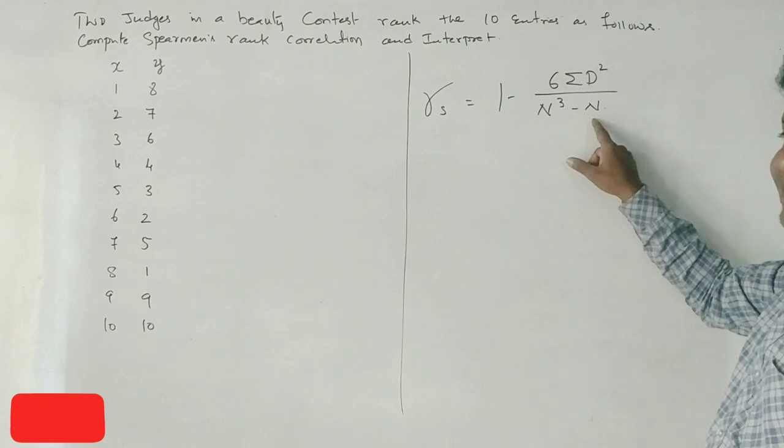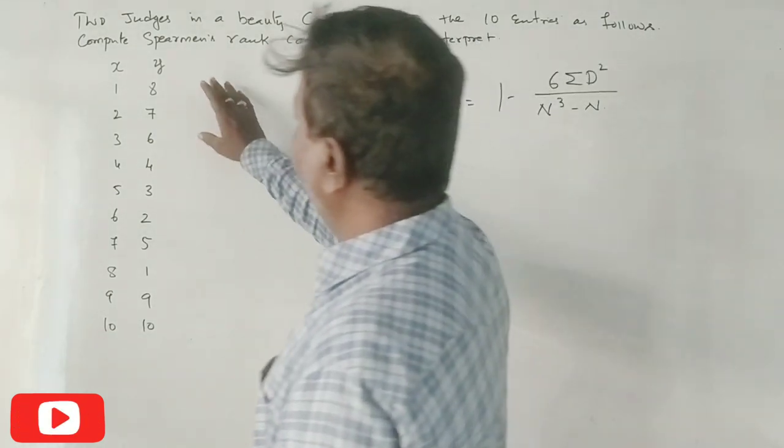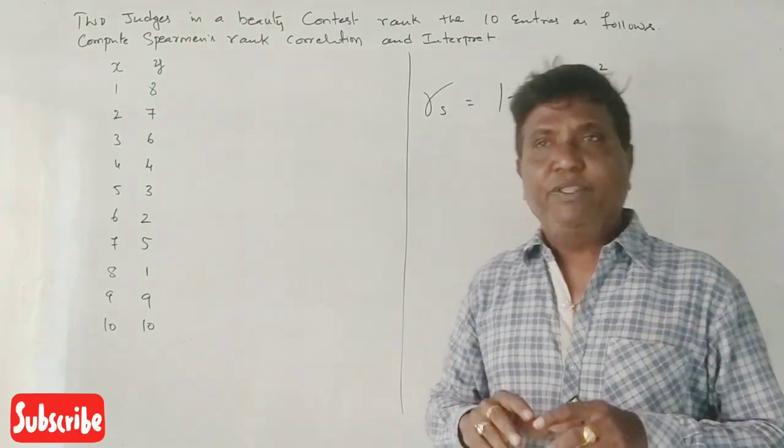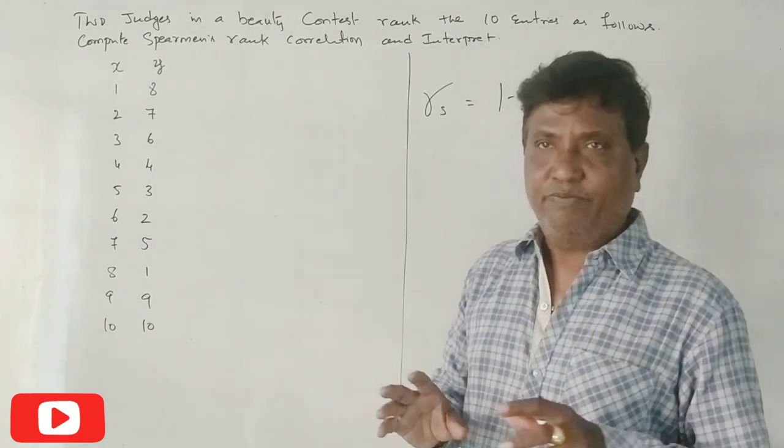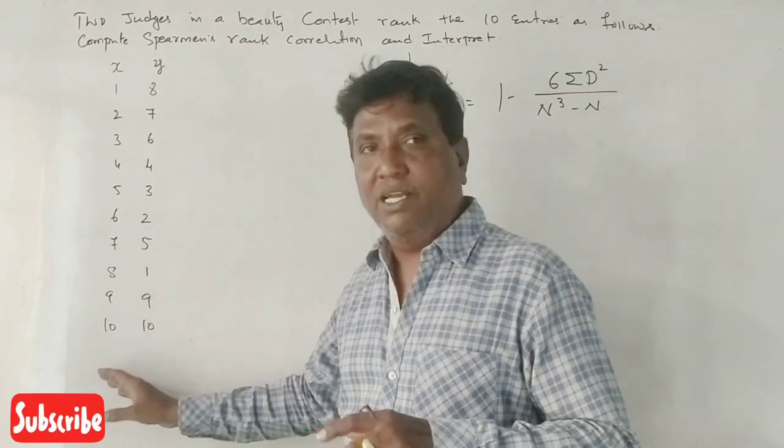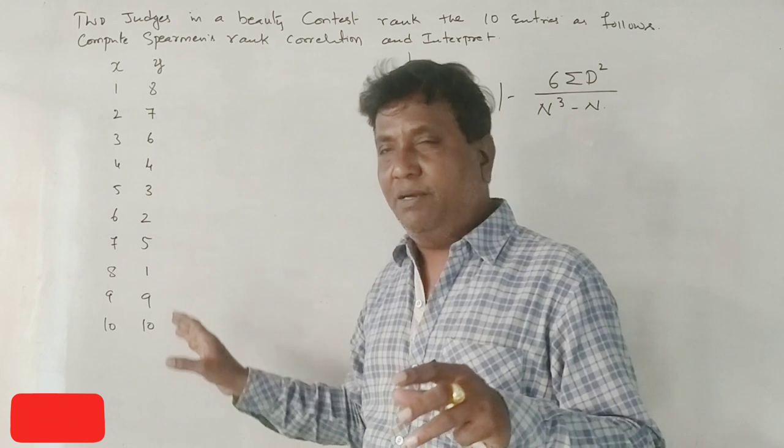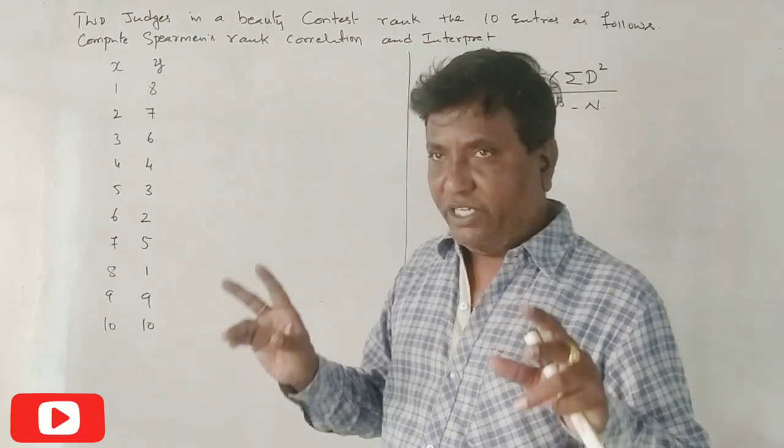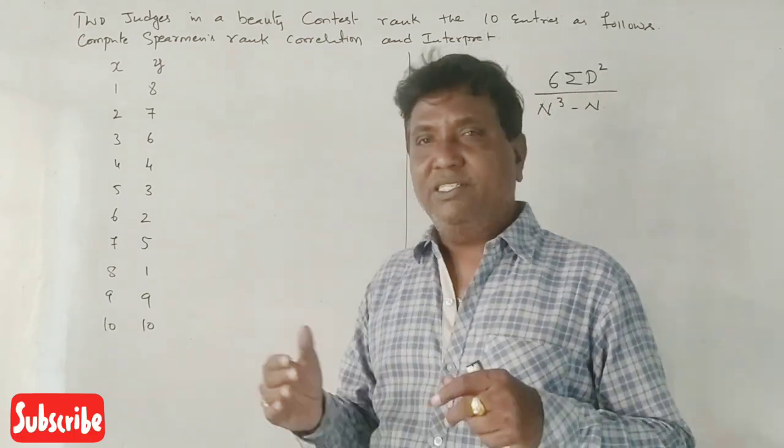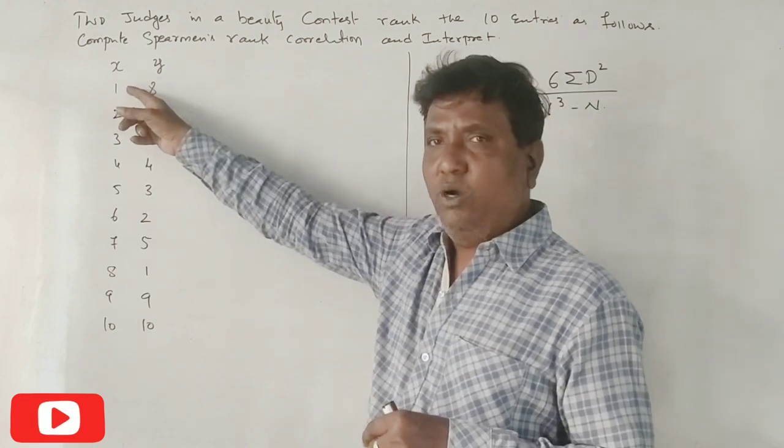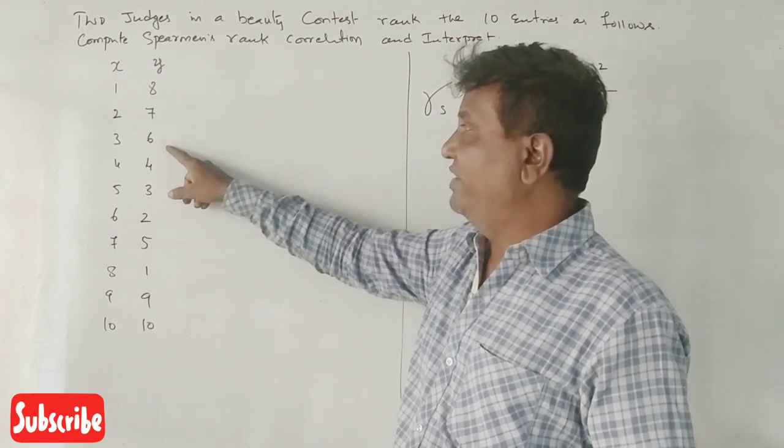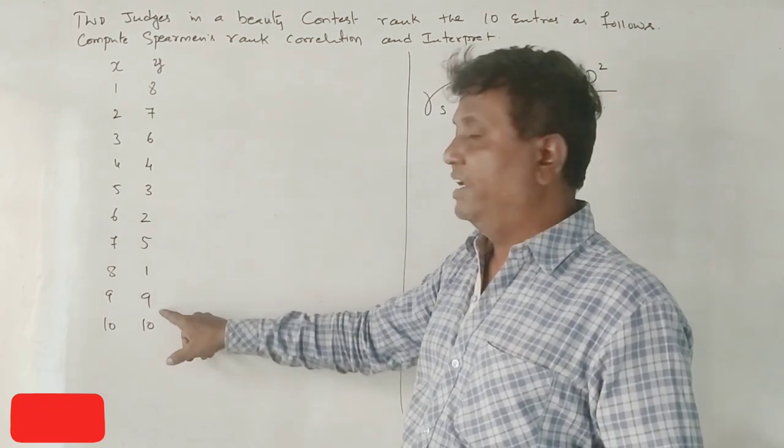Now we already have judge X and judge Y. We have the participants - X team and Y team. The judges now rank the participants. The X team is ranked 1, 2, 3, 4, 5, 6, 7, 8, 9, 10 and Y judge: 8, 7, 6, 4, 3, 2, 5, 1, 9, 10.